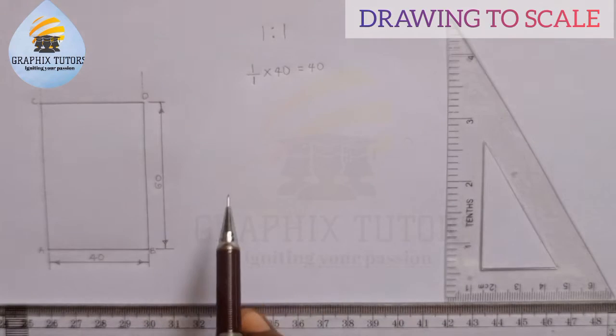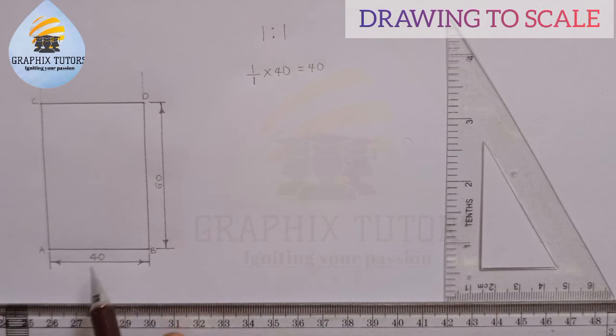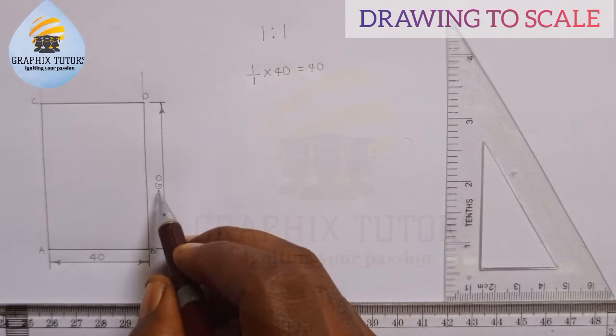So it means that what I am drawing is exactly what I am given. I am using the main full size. It means you draw the full size, whatever dimension you see, use the dimension.